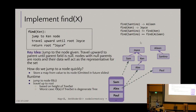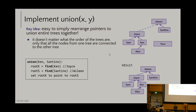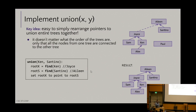When implementing union, the reason we use trees is because it's very convenient to mash things together. Trees give us a way to easily collect multiple items and reassign a parent with just a single reference change. I call find on the nodes I'm told to union — if I call find on Ken, his representative is Joyce; if I call find on Santino, his representative is Eileen. I then set one of those roots to point to the other overall root.